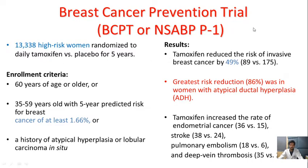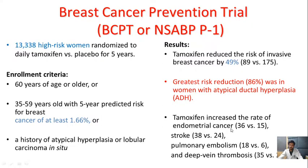In a breast cancer prevention trial, around 13,000 high-risk women were randomized to two groups — one received tamoxifen and the other received placebo for five years. Enrollment criteria included age 60 or more and history of atypical hyperplasia or lobular carcinoma in situ. The result showed that tamoxifen reduces the risk of invasive breast cancer by 49%, with the greatest risk reduction observed in women with atypical ductal hyperplasia. However, tamoxifen is associated with increased risk of endometrial cancer, stroke, pulmonary embolism, and deep vein thrombosis.